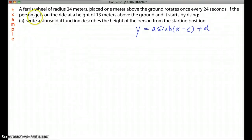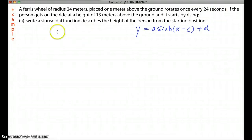Let's look at this question. A Ferris wheel of radius 24 meters placed 1 meter above the ground rotates once every 24 seconds. If the person gets on the ride at a height of 13 meters above the ground and it starts by rising, find the sinusoidal function that describes the height of the person from the starting position.